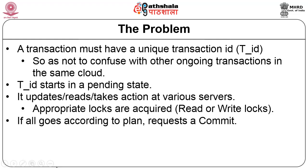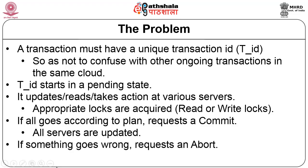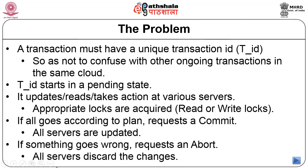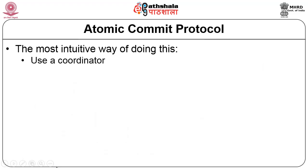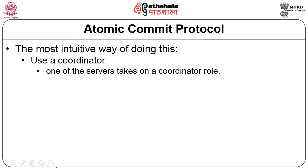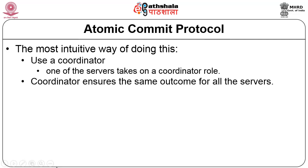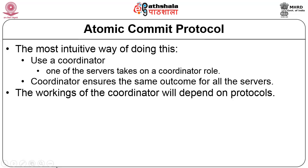If everything goes according to plan and all servers have executed whatever they were supposed to execute, then they all commit. If something goes wrong at one or more servers, then all the other servers will discard the changes that have been made and everybody will abort. In atomic protocol, the typical approach is having a coordinator — we select one of the participating servers as the coordinator, and the coordinator ensures that the outcome is the same for all the servers.